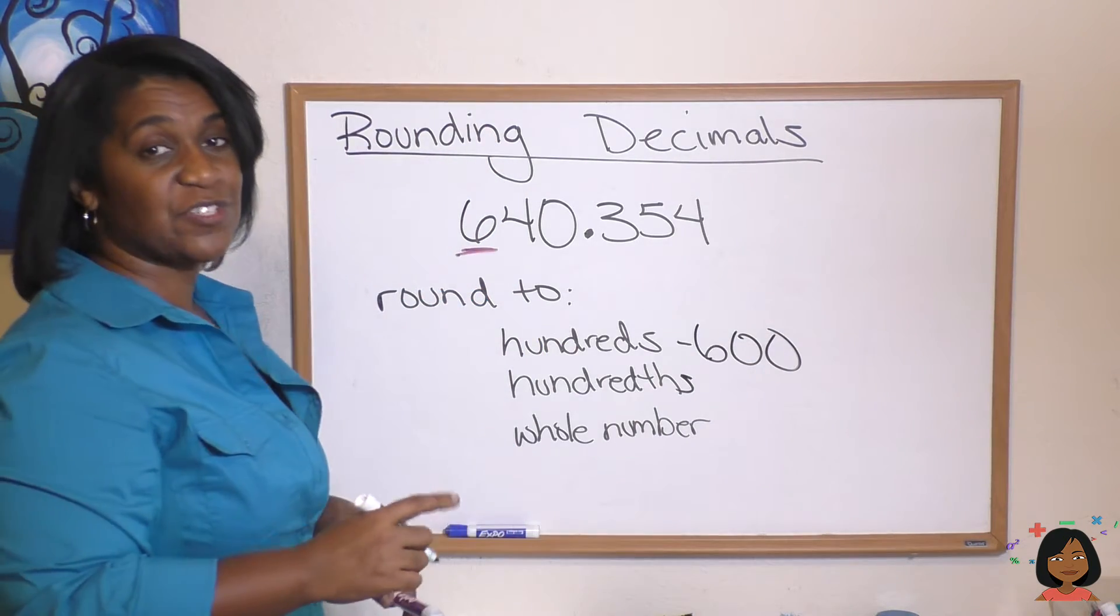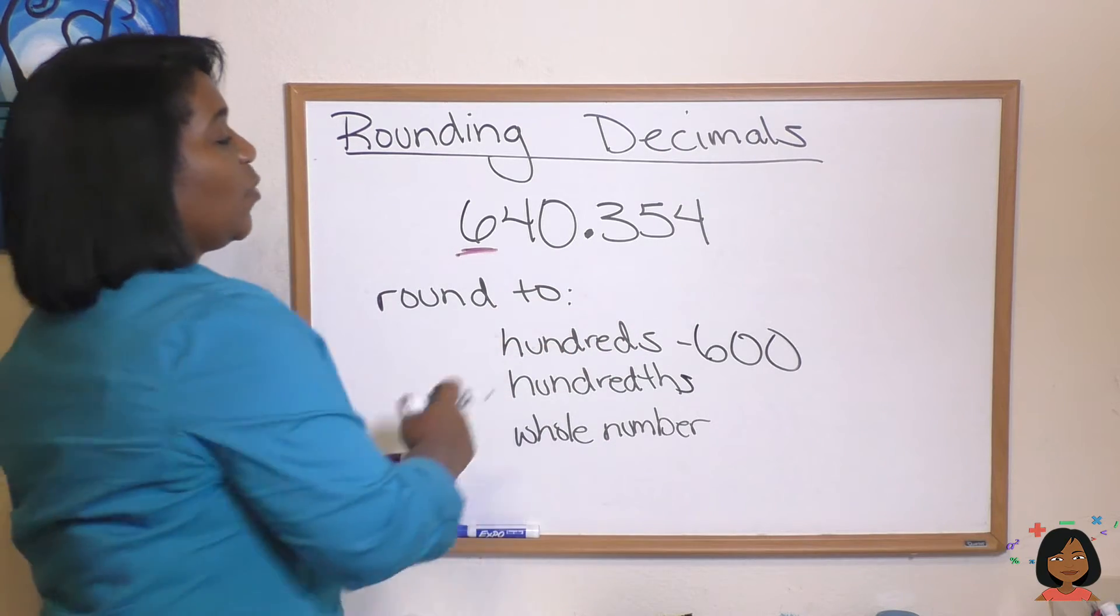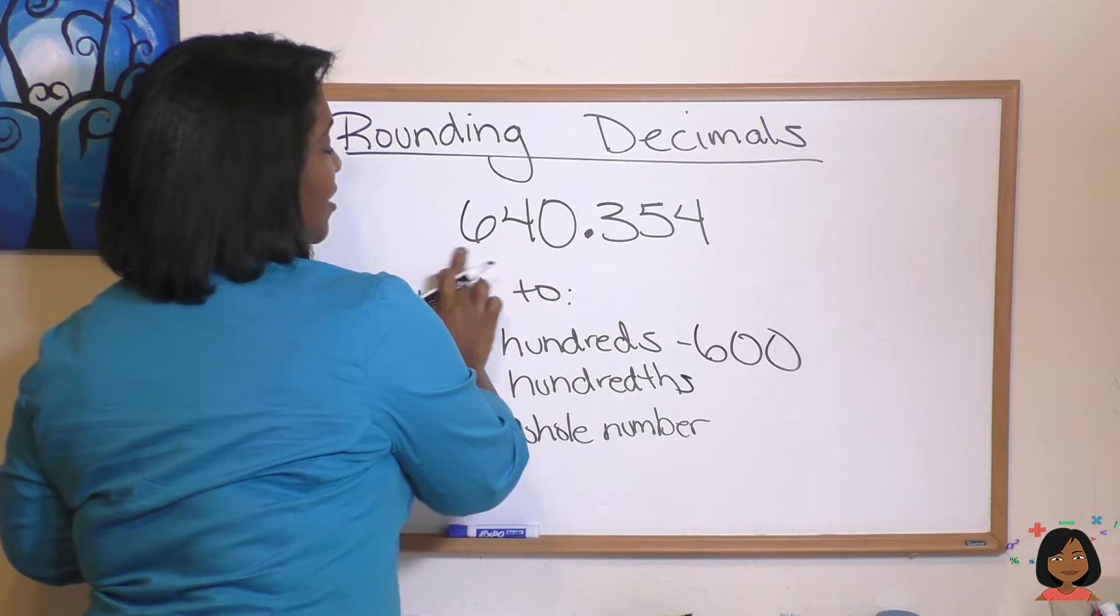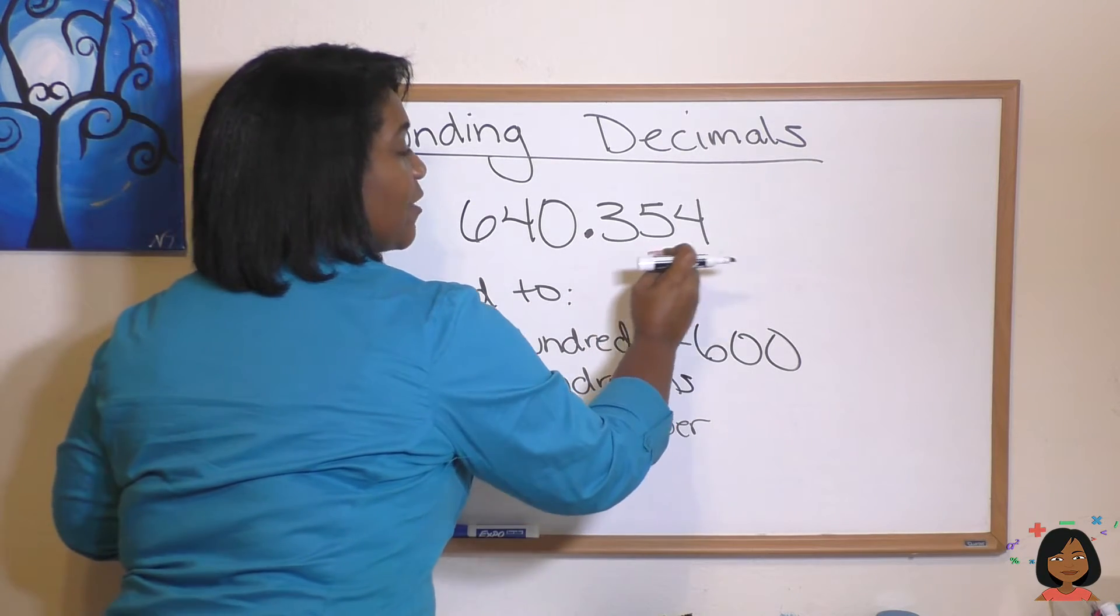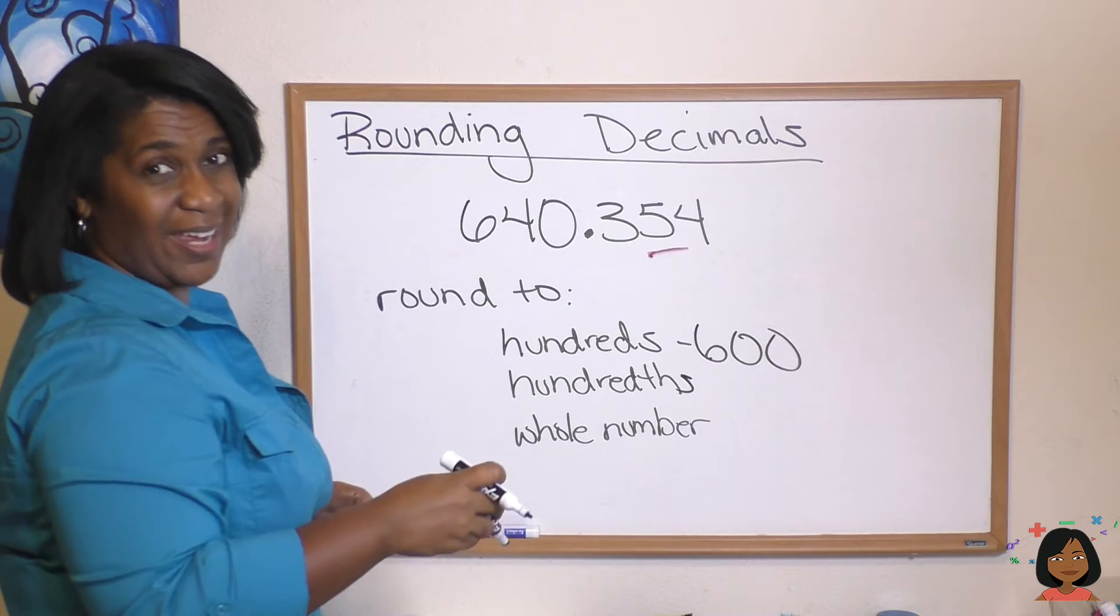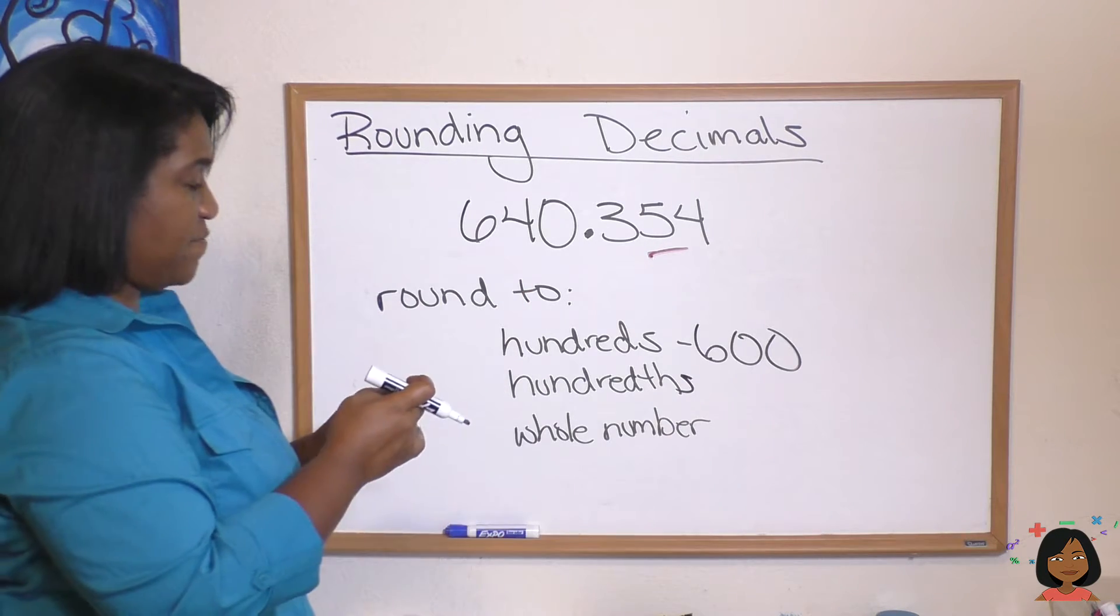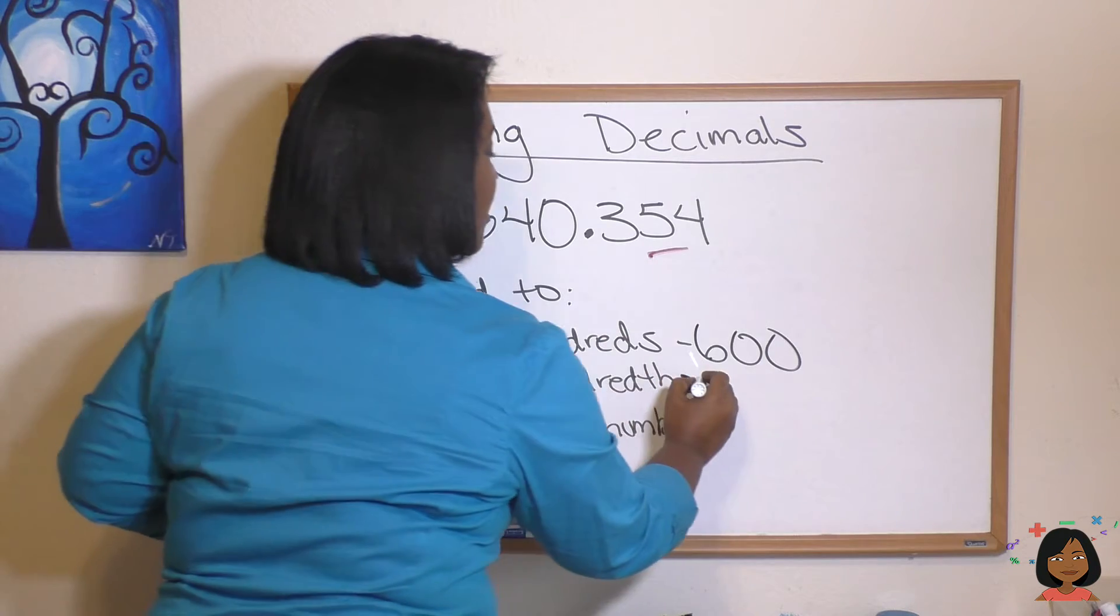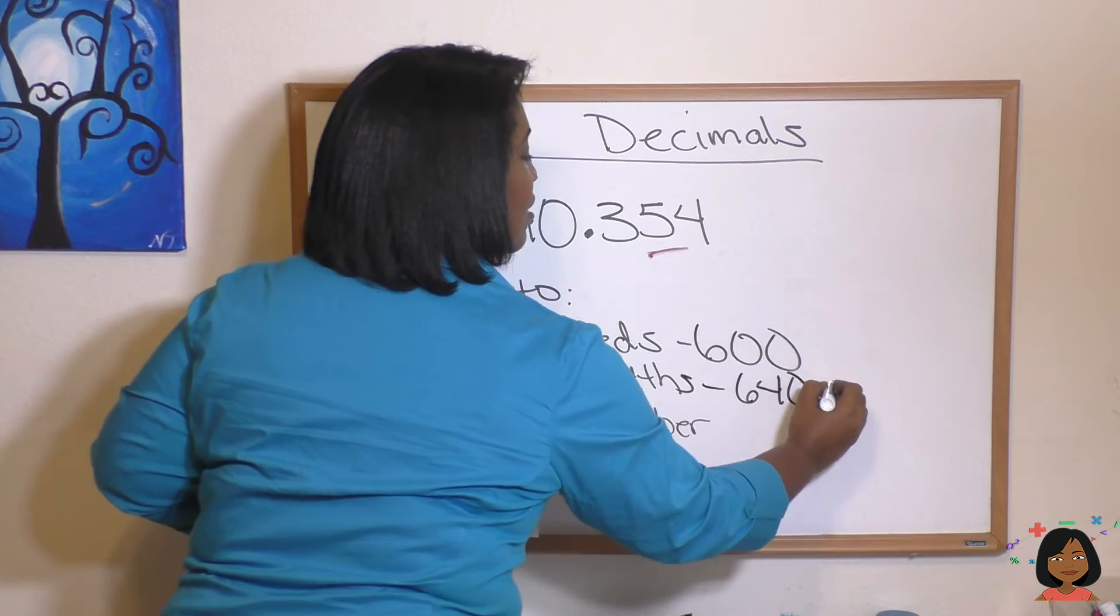Now let's round this to the hundredths, which means we're going to the decimal side. We know this is the tenths, we're going to get rid of that this time, the tenths and the hundredths. So there's our 5. Let's look to the right. It's a 4, which means we get to keep our 5 because it's less than 5. So our hundredths is 640.35.